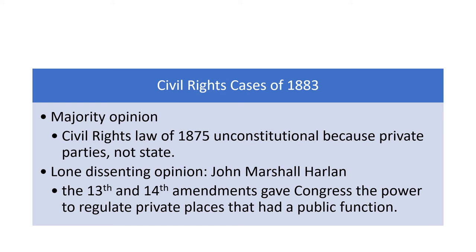A more conservative reinterpretation of the case would be that the federal government can require state governments to protect equality before the law and equal due process. In cases where the states have failed to do so, such as in the case of segregated theaters or railway cars, the federal government could step in and require it because the state had failed to provide equality before the law and equal due process.